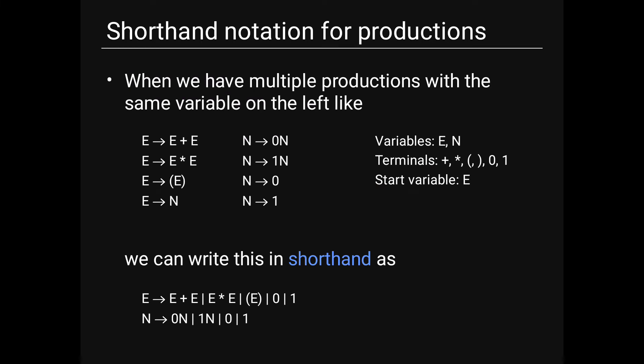Shorthand notation: when multiple productions share the same variable on the left, we combine them. For example: E → E+E | E×E | (E) | N, and N → 0N | 1N | 0 | 1. Variables are E and N; terminals are +, ×, (, ), 0, 1; and the start variable is E.